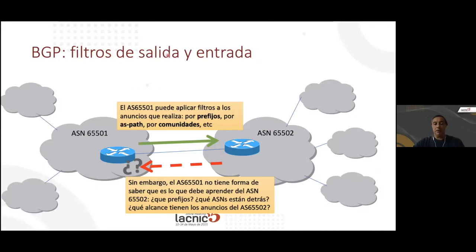It is very important to configure incoming and outgoing filters. As for outgoing filters, AS-65501 can apply filters on announcements through prefixes, AS-path, communities, etc. However, this AS has no way of knowing what it should learn from AS-65502 — what prefixes it has, what autonomous systems are behind it, the scope of announcements of AS-65502 — unless AS-65502 provides that information. And as we said, that information does not come in BGP.